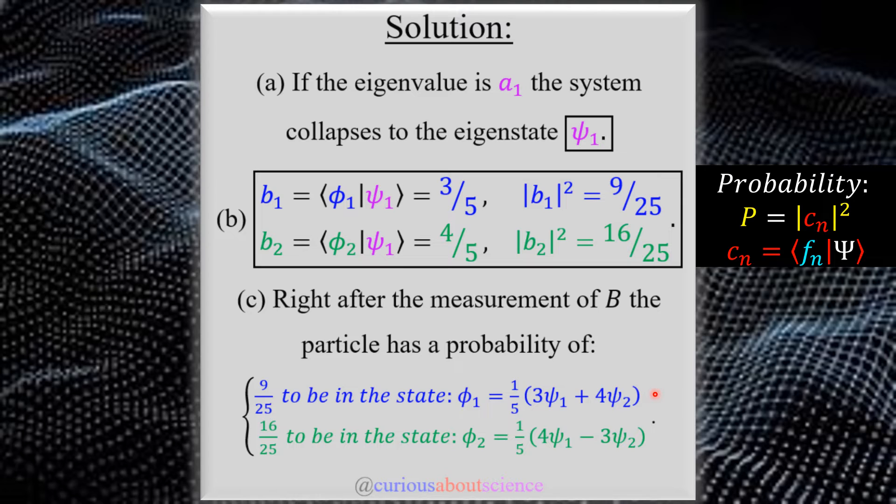And so similarly, I also don't know if I'm going to be in the state, the eigenstate of phi 2, but I have a probability of being in eigenstate phi 2 from these coefficients here. So I have 16 over 25th chance to be in phi 2. So what this means now is that we're going to have to find a joint probability because we don't know the result of the measurement on B.